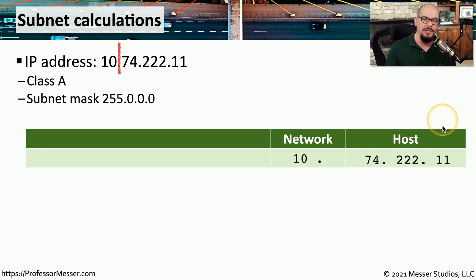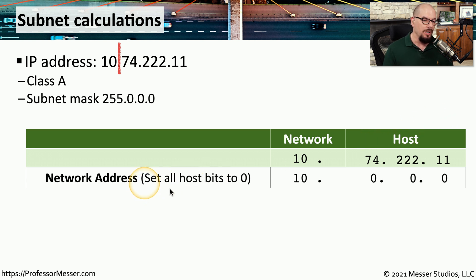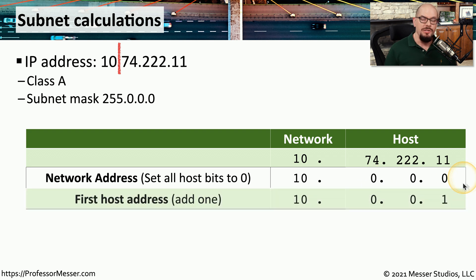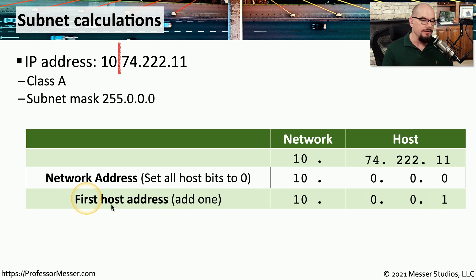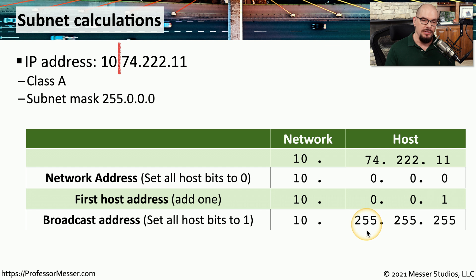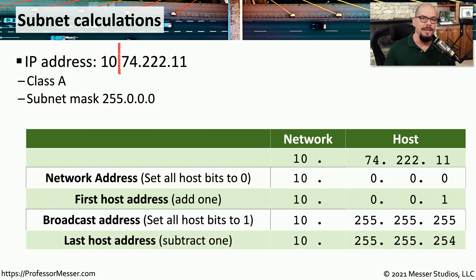To determine the network address, we set all host bits to 0, giving us 10.0.0.0. The first usable IP address is one higher than the network address, so we get 10.0.0.1. To calculate the broadcast address, we change all host bits to all 1s, which in decimal is 255, so the broadcast address is 10.255.255.255. The last usable host address is one value lower than the broadcast address, making it 10.255.255.254.